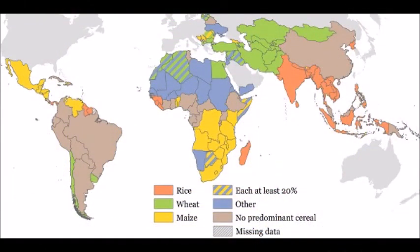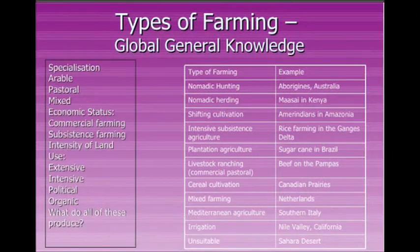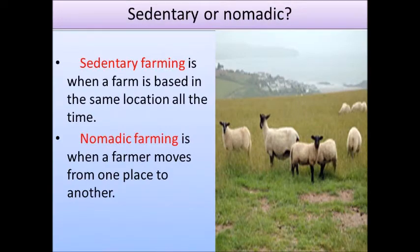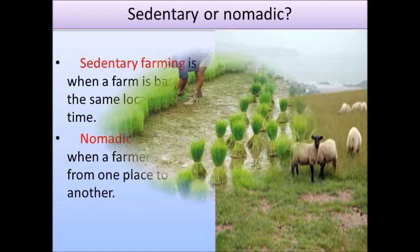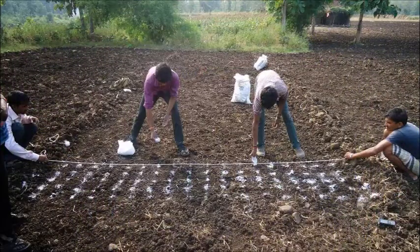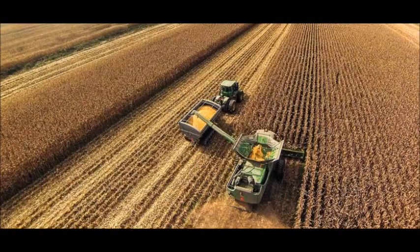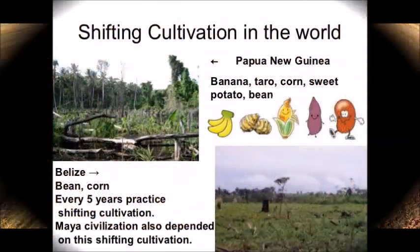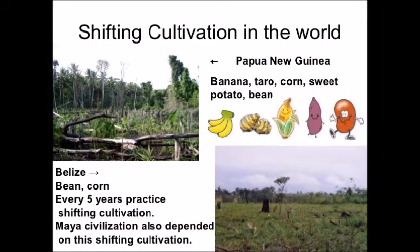Depending on every government and to some extent culture, different types of cultivation systems operate in various parts of the world. Today we'll know about some important agriculture practices followed in the world. The first one is sedentary cultivation, also called settled cultivation. It is the practice of continued use of land year after year, and this is the normal practice in most of the world including India.